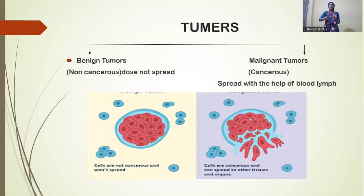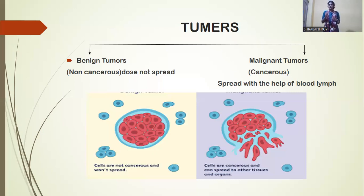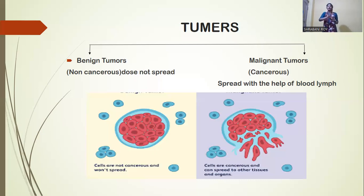When a normal cell is converted into a benign tumor, they grow but have a limitation — in a certain period, they cannot grow or spread. This type of tumor is non-cancerous. However, it can be converted by some factors into a malignant tumor, which then causes cancer and spreads through the blood to the whole body.